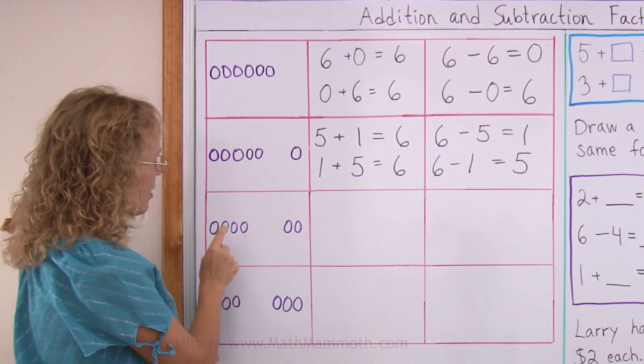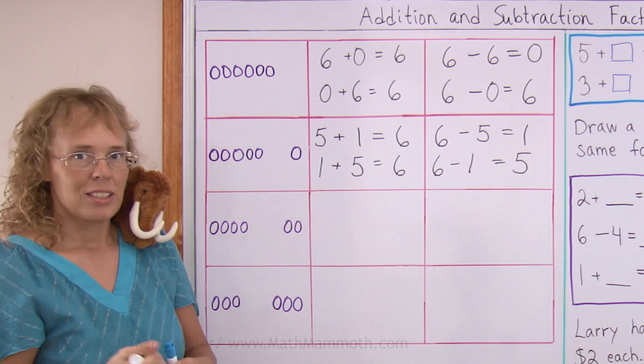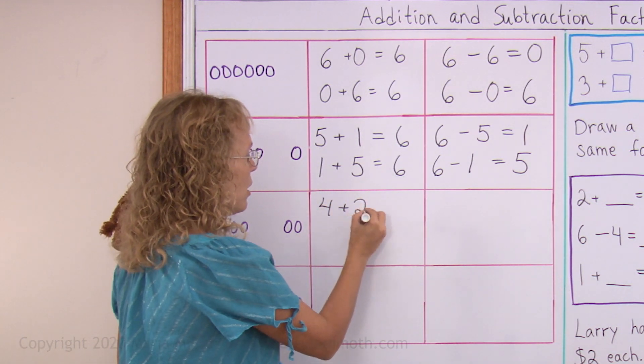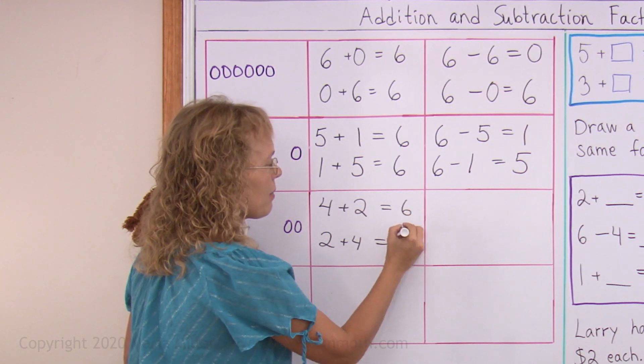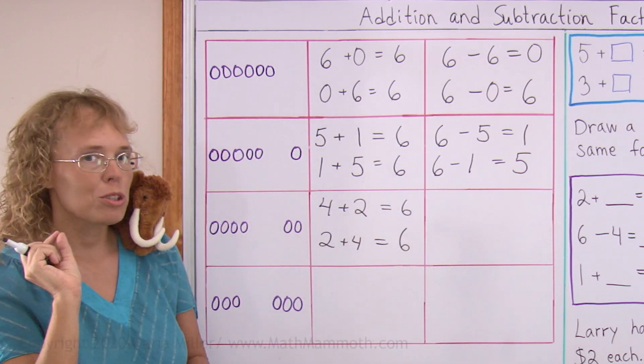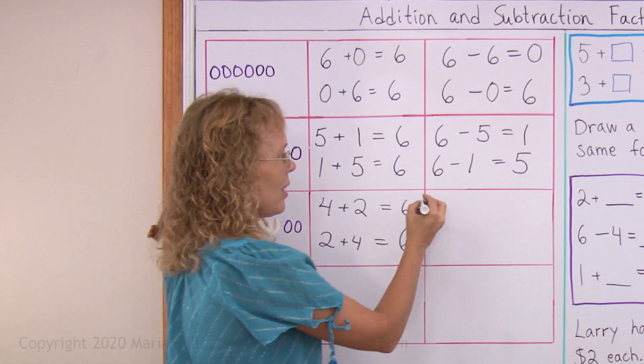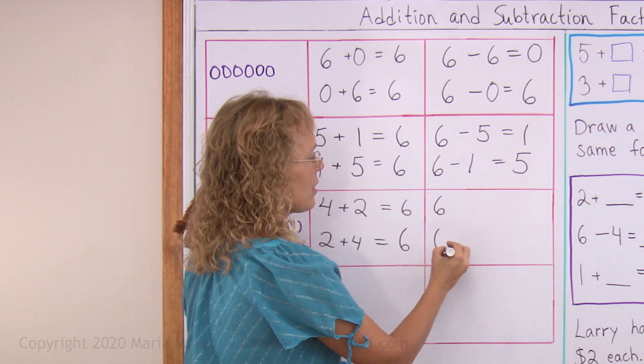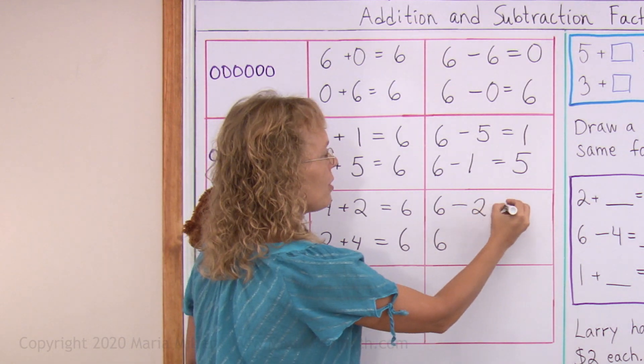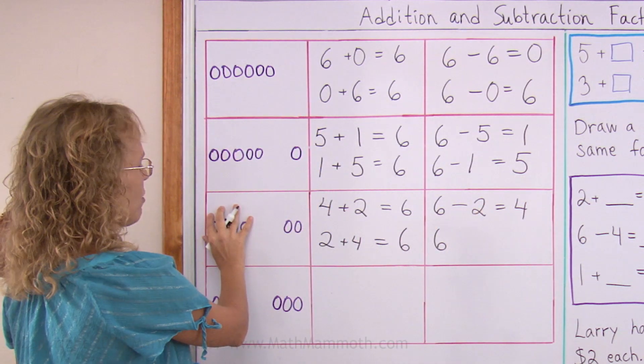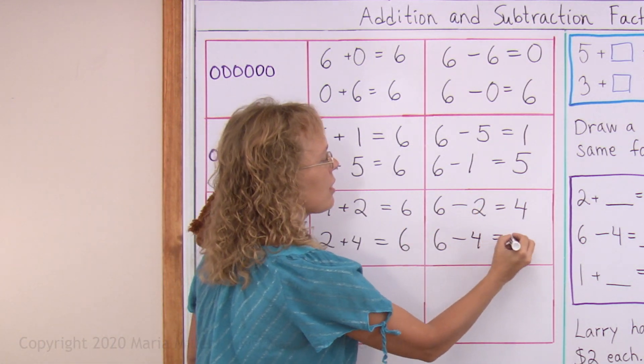And now over here, four and two. So I will write the additions: four plus two and two plus four, and both equal six, right? Can you tell me what the two subtractions are? Start with the total six. Take away these two, leaves four. Take away these four, leaves two.